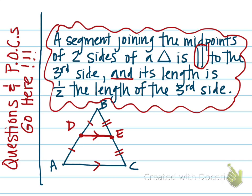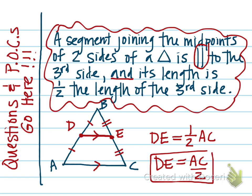The second part of the theorem is that the length of DE is half the length of the third side, AC. So DE equals one half of AC, or equivalently, DE equals AC divided by two. If you have expressions representing those lengths, there is a relationship there. The segment DE that connects the midpoints of the two sides is called the midline. To find the midline, just find the midpoints of two sides and connect them.